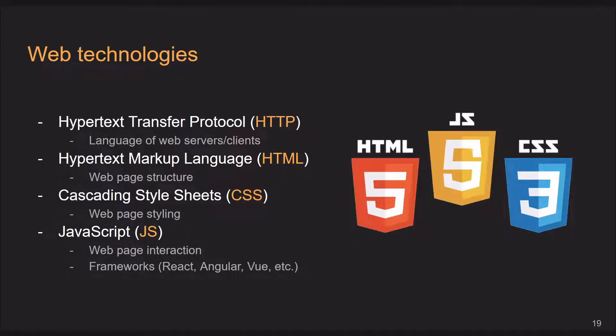There are some technologies that we use to support the web. HTTP is the primary protocol we use to transfer content over the web, and it's how clients and servers talk to one another in order to serve up your favorite content — like watching me on Twitch, sitting there watching TikToks for hours, or Snapchatting your friends.